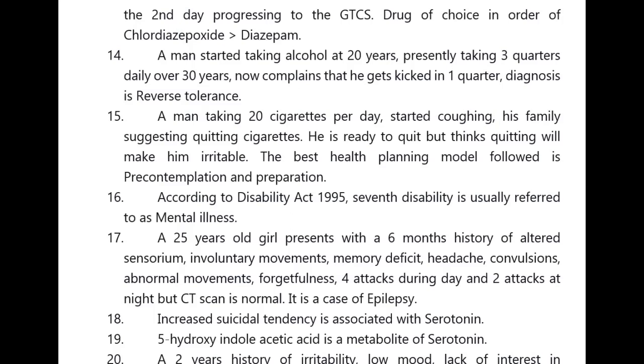A man taking 20 cigarettes per day started coughing. His family is suggesting quitting cigarettes. He is ready to quit but thinks quitting will make him irritable. The best health planning model followed here is pre-contemplation and preparation.